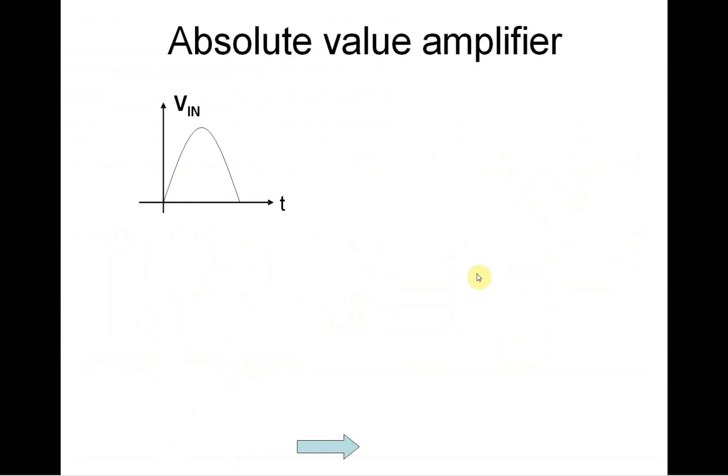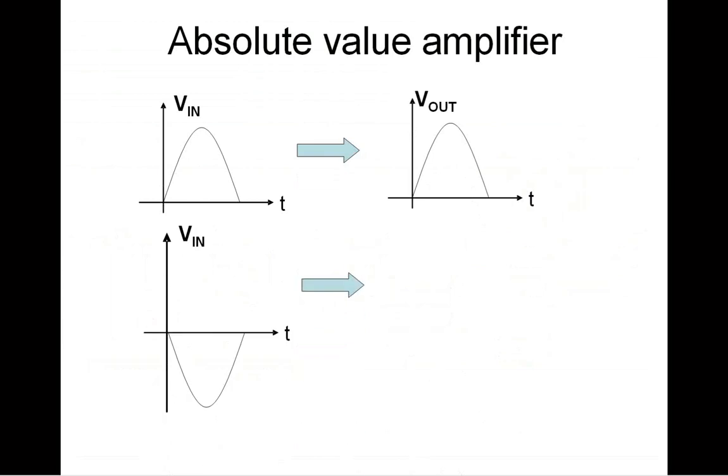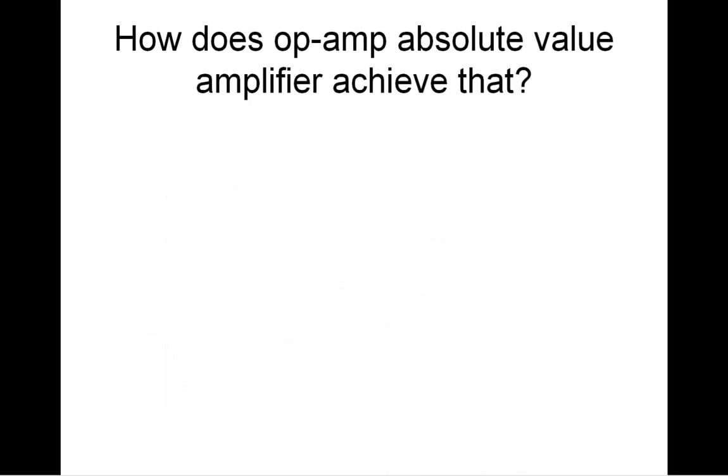Absolute Value Amplifier should directly forward input signals on the output if input signal is positive and invert input signal to the output if input signal is negative. How does Op-Amp Absolute Value Amplifier achieve that?